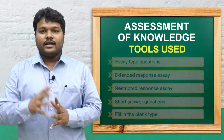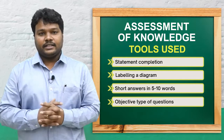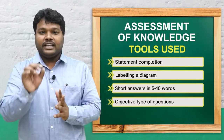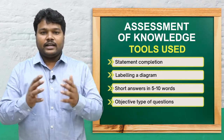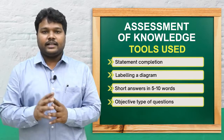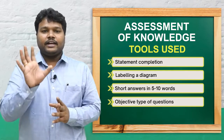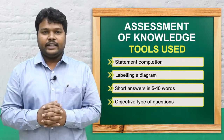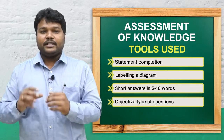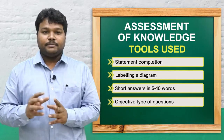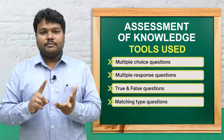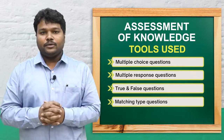The second tool is short answer type, which includes methods such as labeling a diagram — where students are given a diagram and asked to label the parts for five marks — and short answer questions focused on specific topics, like writing only about nursing diagnosis for five marks. Another method is completion of a statement, where students complete a given statement. The last category is competitive type: multiple choice questions, match the following, and fill in the blanks.